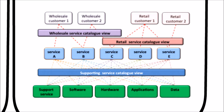The Retail Customer View has the details of all of the IT services delivered to retail customers and includes relationships to the customers they support. The Supporting Services View has details of all the supporting IT services, together with relationships to the customer-facing services they underpin. It also includes components, CIs and other supporting services necessary to support the provision of the service to the customers.